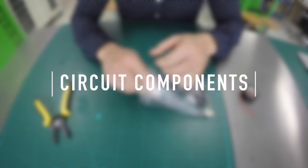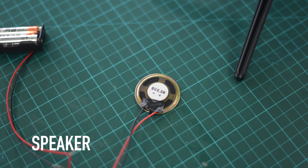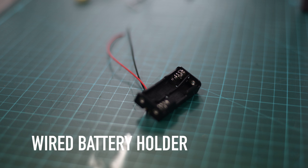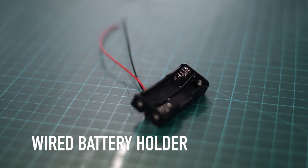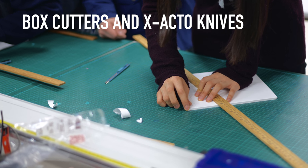Here are the items provided for the project. A circuit board that contains a small mic and connectors, a speaker, two buttons, a wired battery holder, foam board, box cutters, and exacto knives.